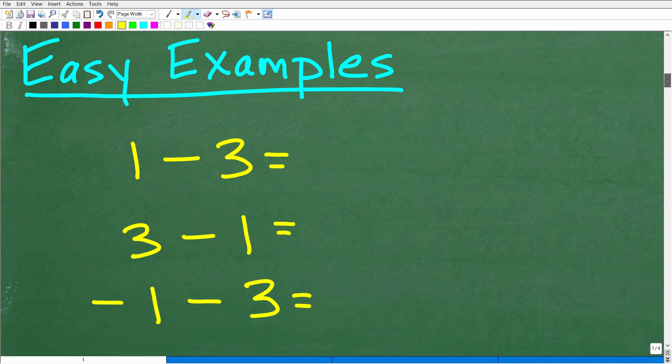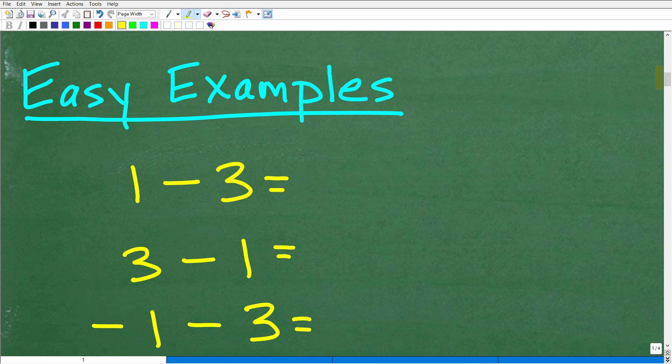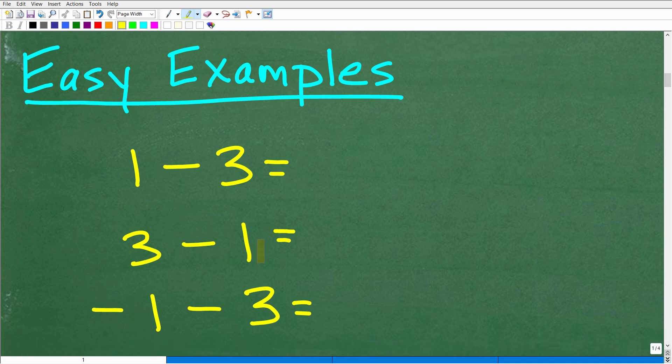let's just take a look at some easy examples when we're talking about dealing with subtracting numbers. So here I have 1 minus 3. It's the same numbers, 1 and 3. But here we have 1 minus 3, this is 3 minus 1, and then negative 1 minus 3. Okay, so let's take a look at each one of these examples.